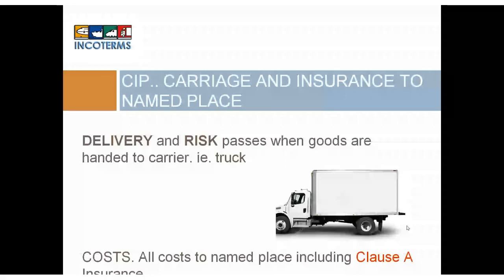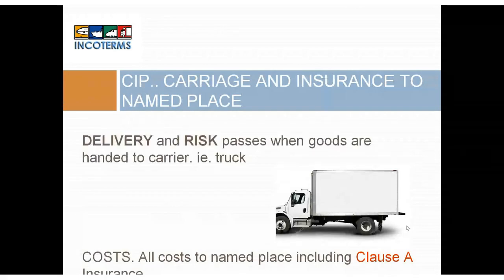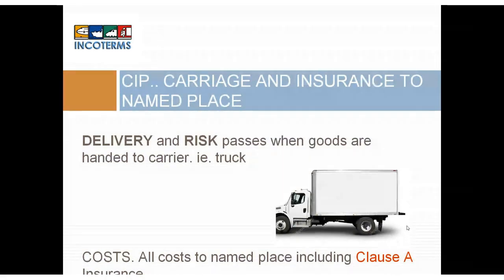Remember, on an LCL situation under CIF, Incoterms 2020 said it was appropriate to use CIP. Here's CIP: delivery and risk passes when the goods are handed to a carrier — the truck. You have a very short risk and delivery factor. The truck comes in to pick up your LCL consignment to bring it to an inland depot. Your risk and cost finishes when they pick it up. And of course it's Clause A insurance. That is why they're saying use CIP instead of CIF. They said it in 2010 too, but weren't so dogmatic about it. In 2020, they are.